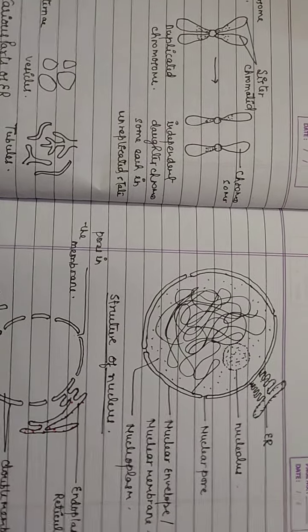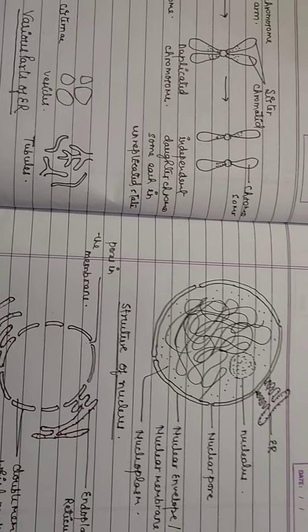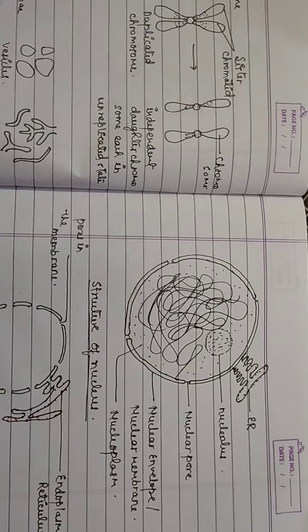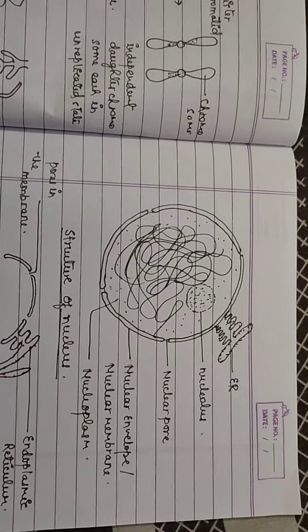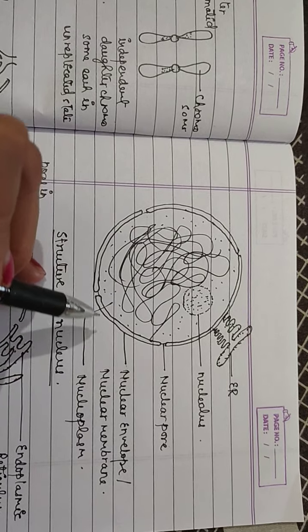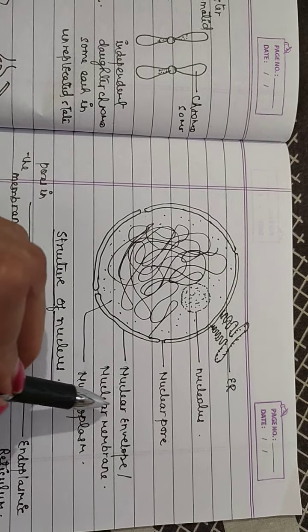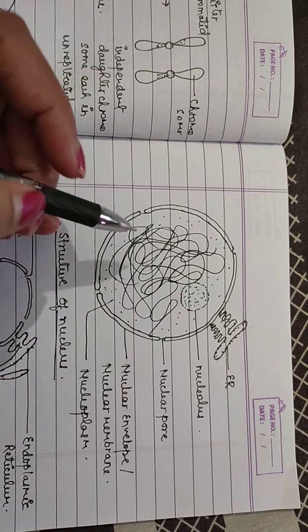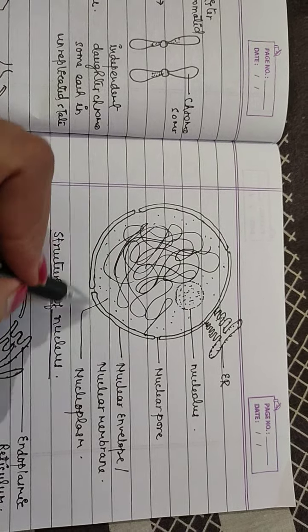Today we will discuss the structure of the nucleus and associated structures like endoplasmic reticulum and ribosomes. In this diagram, you can see the nucleus. The outermost covering is the nuclear membrane, also known as the nuclear envelope, which is absent in prokaryotic cells. Then there is the nuclear pore, nucleolus, and the fluid inside called nucleoplasm. The thread-like intertwined structure is known as chromatin fibers.